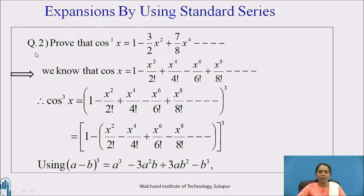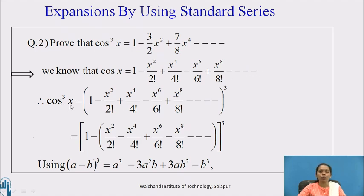Using the binomial theorem, let us solve the second example. Prove that cos³x = 1 - (3/2)x² + (7/8)x⁴ + .... The cosine series is cos(x) = 1 - x²/2! + x⁴/4! - x⁶/6! + x⁸/8! - .... Therefore, cos³x equals the series expansion of cos(x) whole cubed, which we write as (1 - [remaining terms])³, in the form of (first term - second term)³.